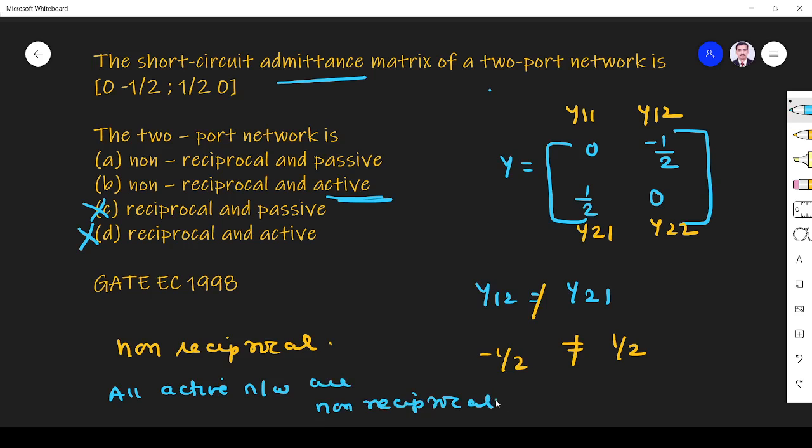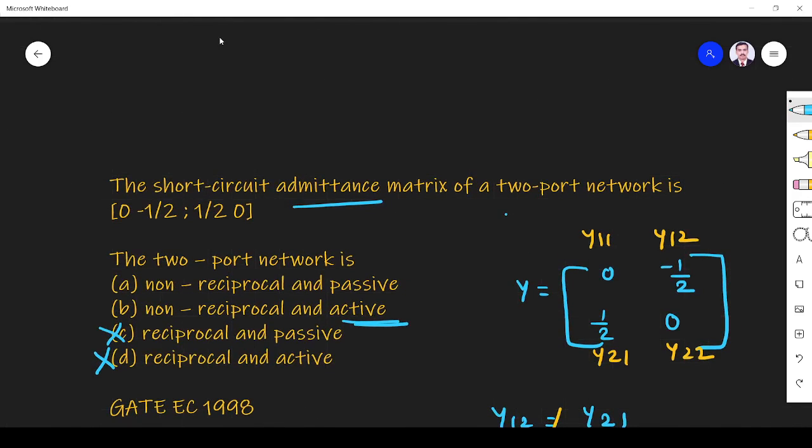Why are all the active networks non-reciprocal? We know that a reciprocal network is, a two-port network is said to be reciprocal under what condition? So I write here: a two-port network is reciprocal if the ratio of excitation at one input to the response at other input, so excitation at one input to the response at output is same.